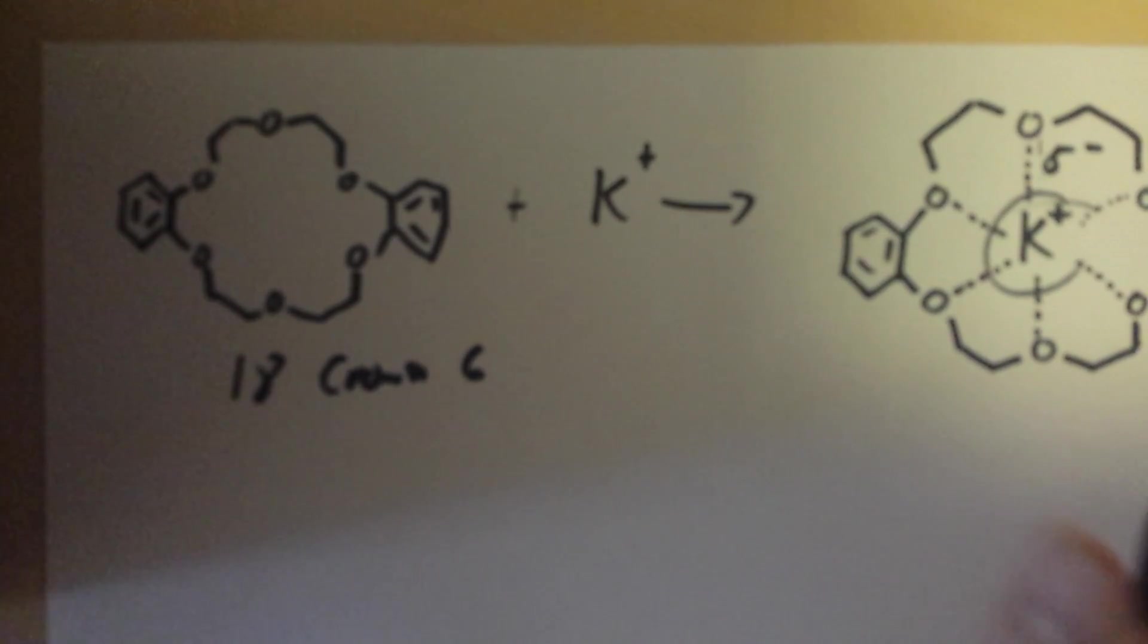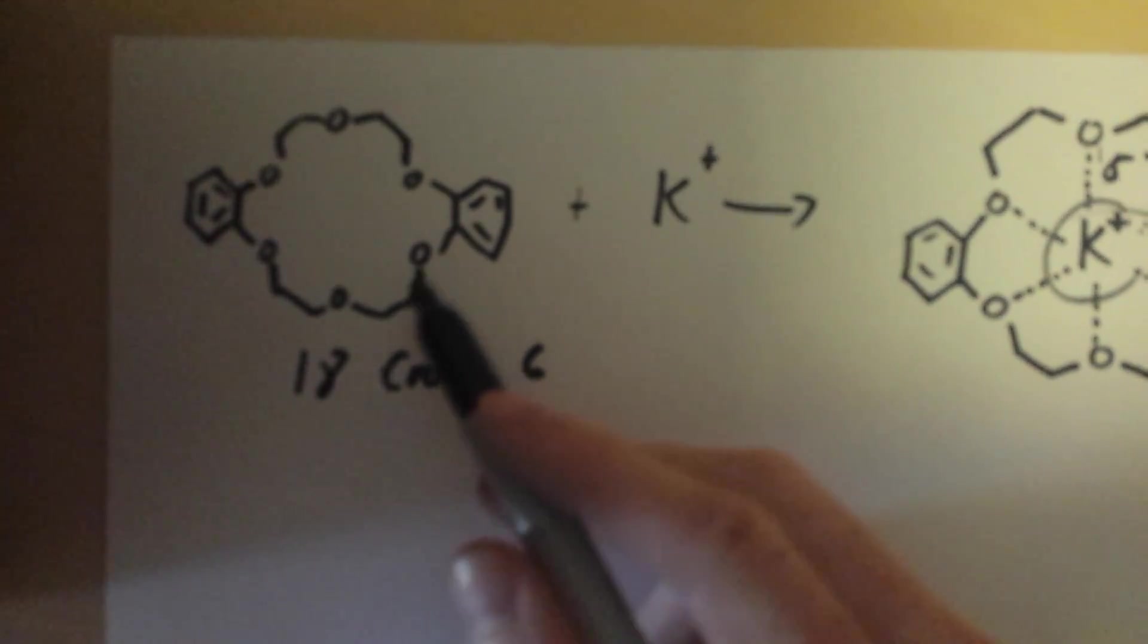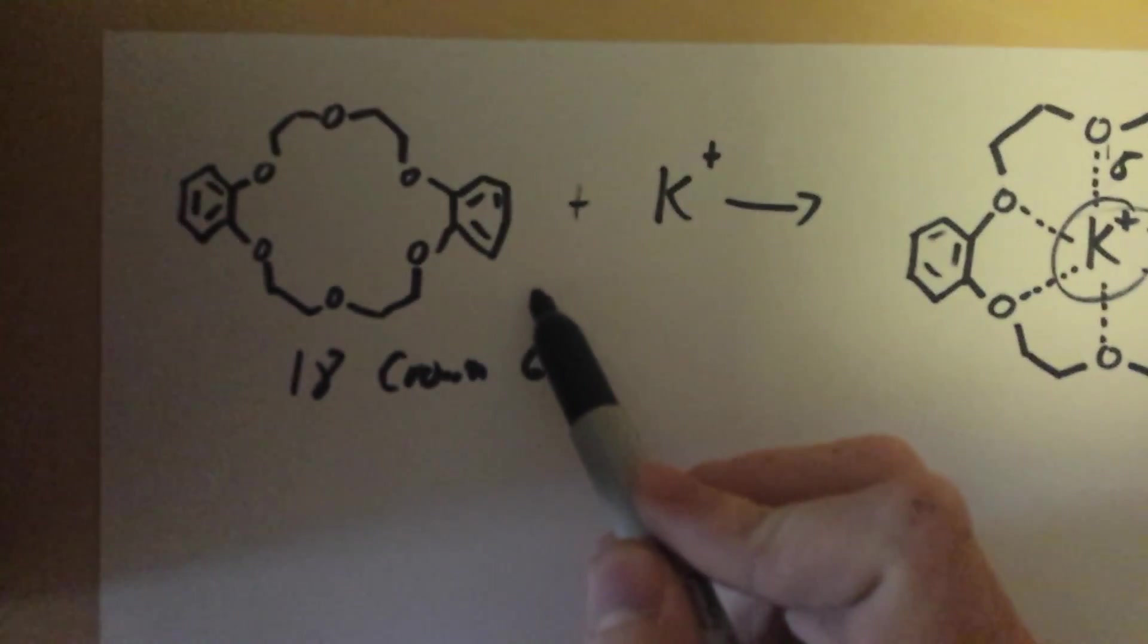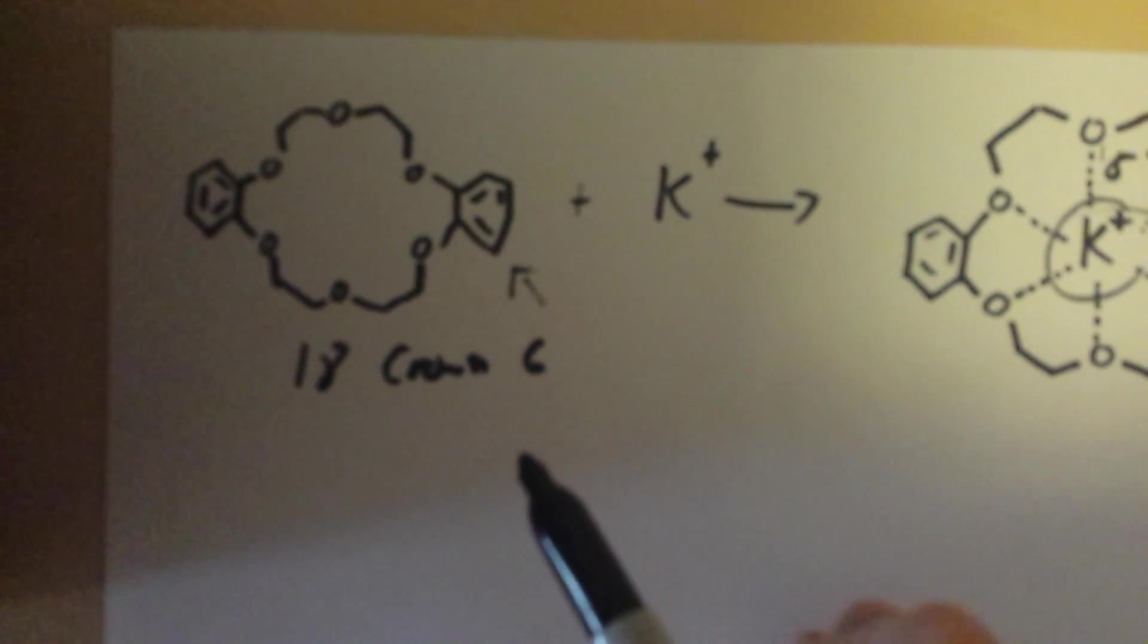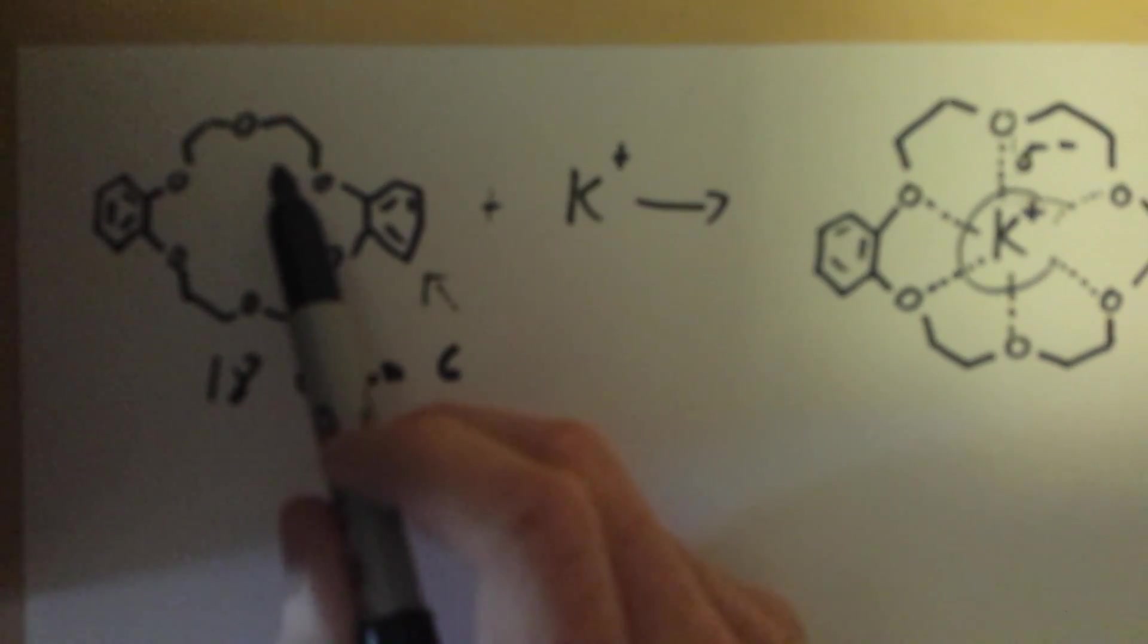Now, the way that these crown ethers actually dissolve the potassium permanganate is really simple. So, right here we have our crown ether, 18 crown 6, the two benzene groups right there, and we have these negatively charged oxygens on the ether.